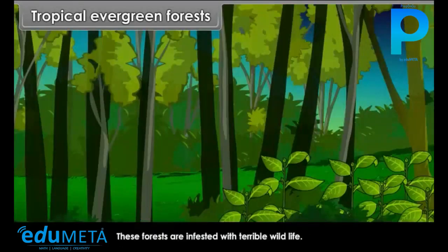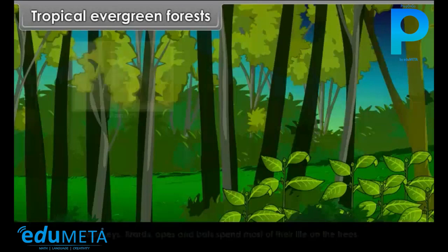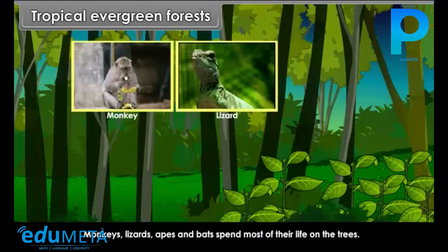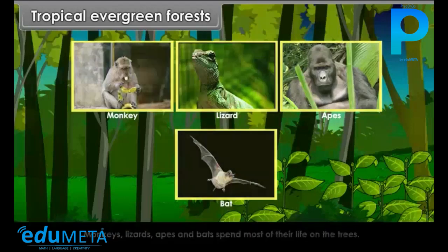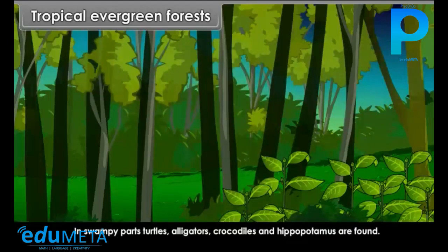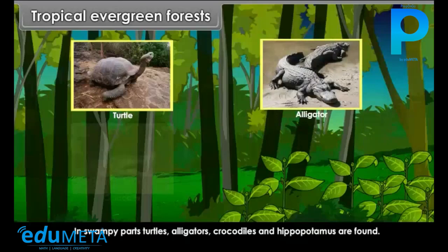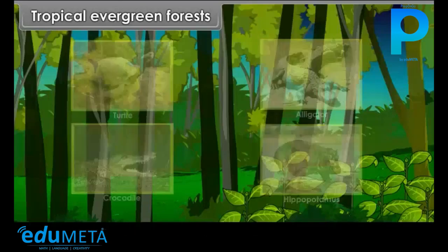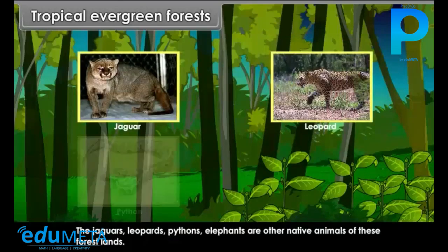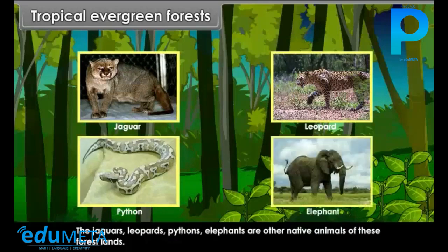These forests are infested with terrible wildlife. Monkeys, lizards, apes and bats spend most of their life on the trees. In swampy parts, turtles, alligators, crocodiles and hippopotamus are found. Jaguars, leopards, pythons and elephants are the other native animals of these forest lands.